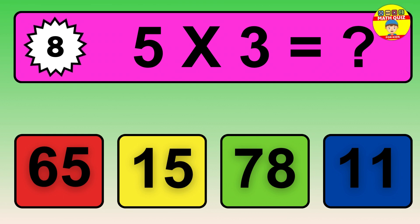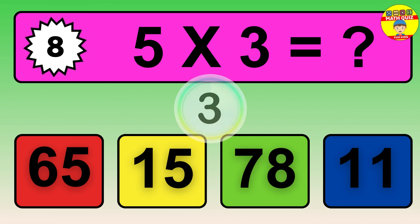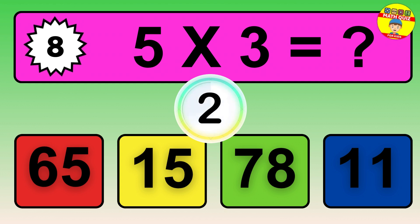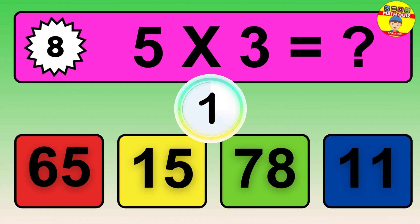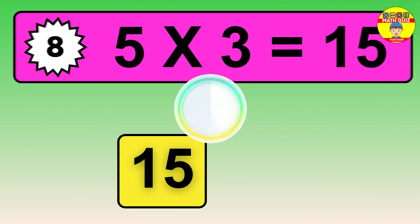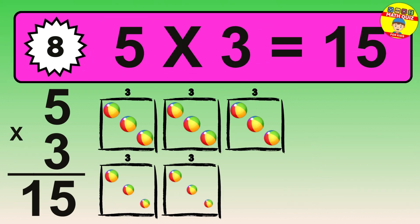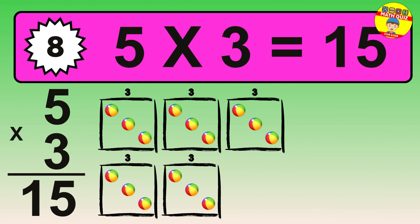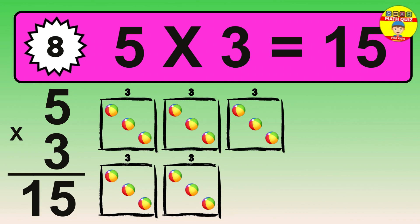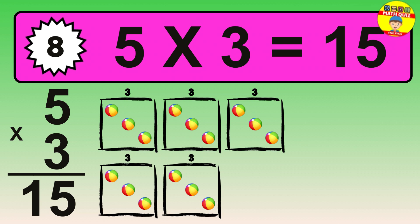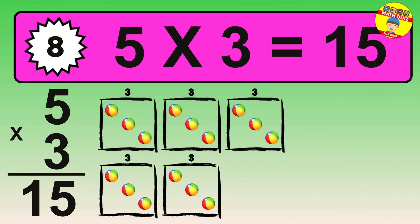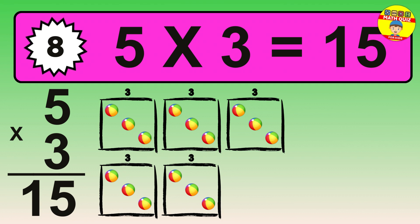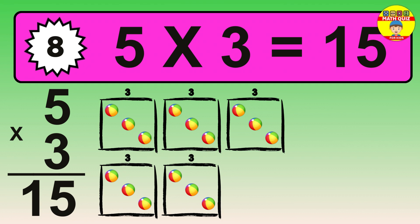Question 8. 5 times 3 equals what? The answer is 5 times 3 is 15. To calculate, we have 5 groups with 3 balls each one. So, how many balls do we have? 15 balls.